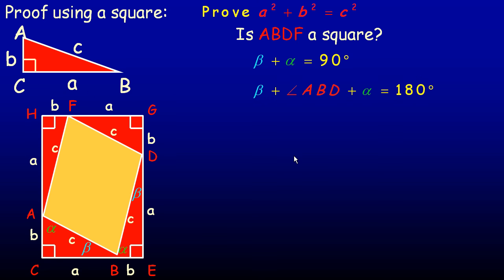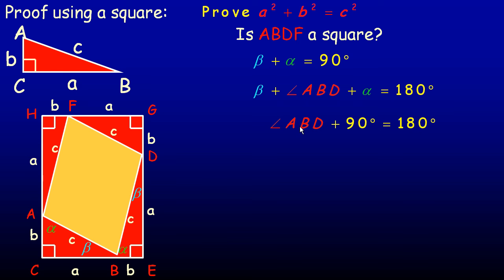The angle ABD — so we're talking about this angle in the yellow quadrilateral — angle beta down here, plus this angle ABD, plus alpha, together they make a straight line, so together they make 180 degrees. So beta plus angle ABD plus alpha equals 180. Because we know beta and alpha add to 90, this simplifies to angle ABD plus 90 equals 180, so angle ABD must be 90 degrees. By that same reasoning, all four angles of that quadrilateral are right angles.